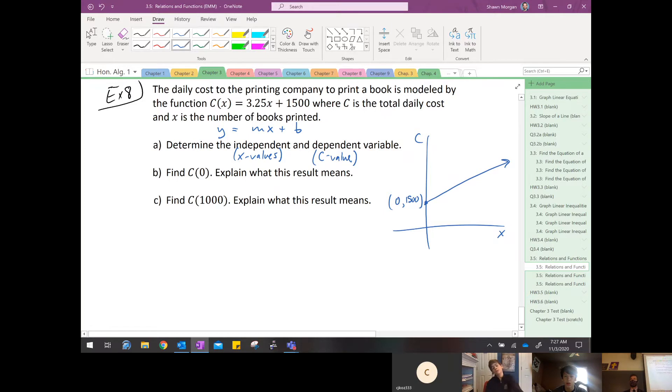The domain here would be all of our whole numbers - zero, one, two, three - because you're not going to print half a book. C of zero means that's the cost of printing zero books. So what do you think C of 1,000 would be? If C of zero is the cost of printing zero books, C of 1,000 would be the cost of printing 1,000 books. The way that we would find that is 3.25 times 1,000. This is evaluating, where we would plug and chug. That's going to give us 3,250 plus 1,500. That would be the cost of printing 1,000 books - 4,750.